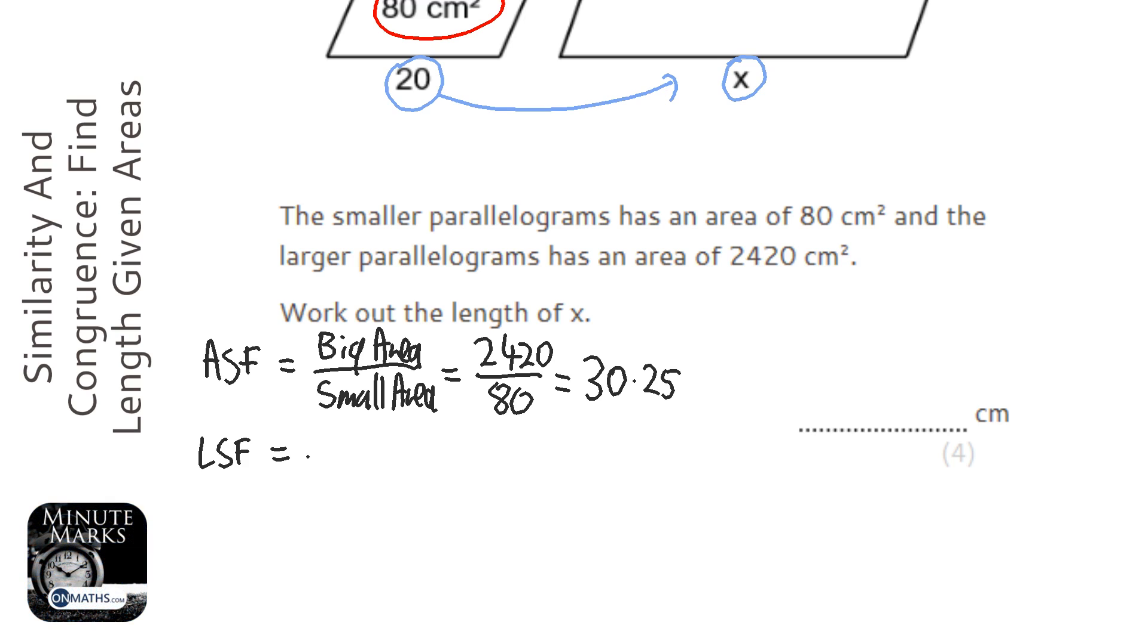So to go the other way, we just square root it. So we just need to square root 30.25. So square root 30.25 and the answer is 5.5.